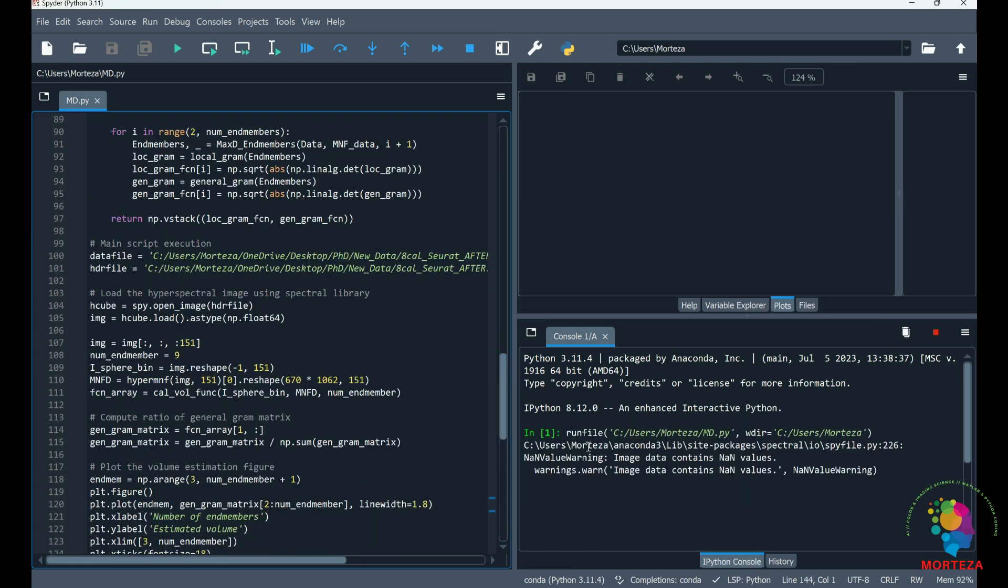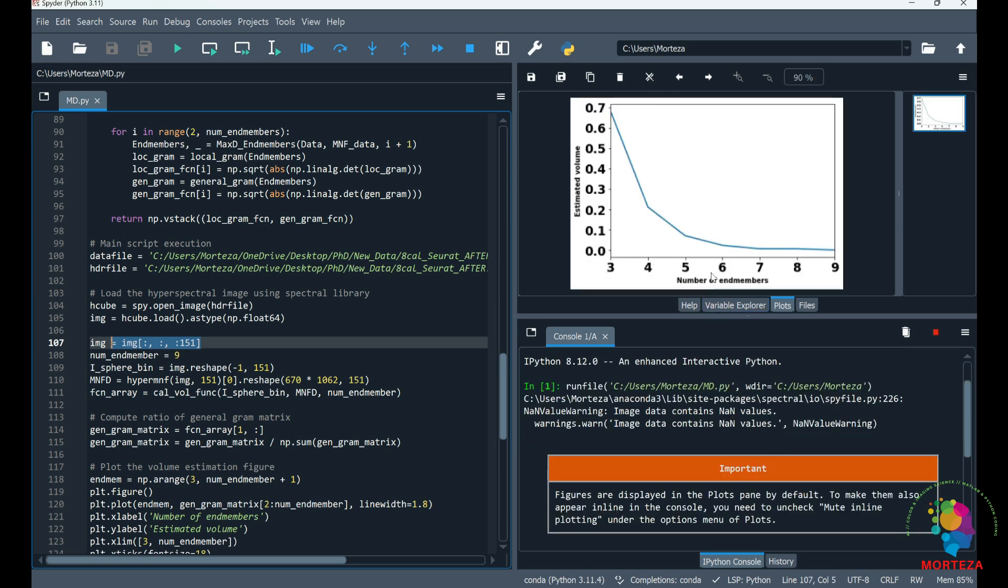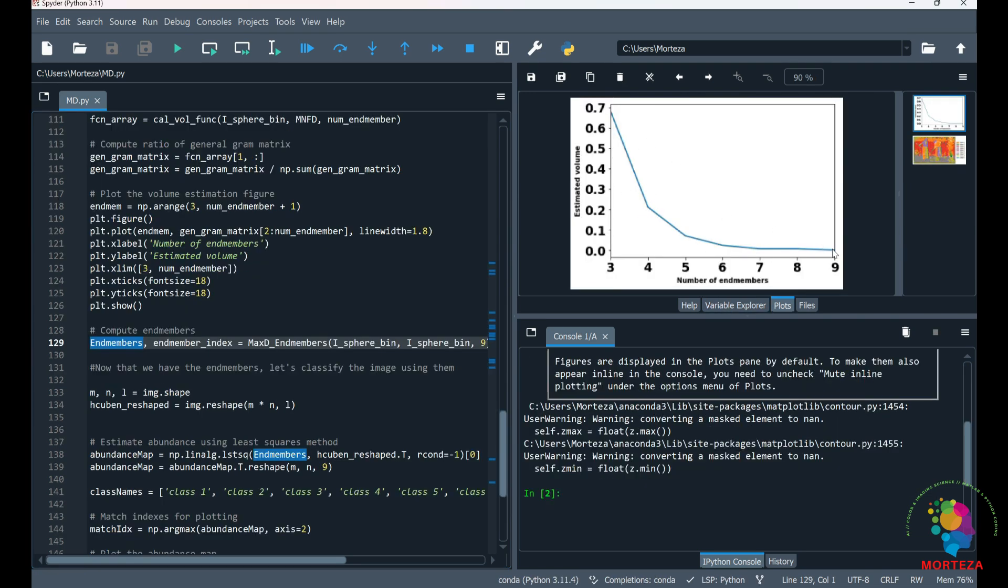Okay, the computations are being done. As you can see, there are NaN values in the last band of my hyperspectral data, so that's why I'm going to exclude the last band. But you might not need to do this.